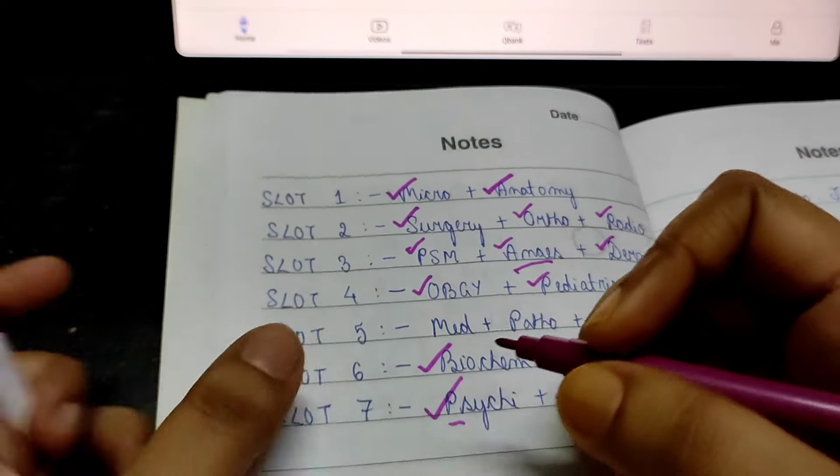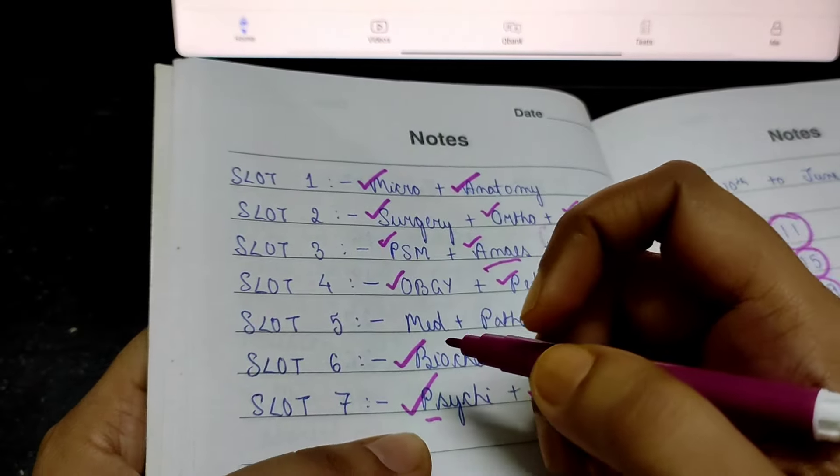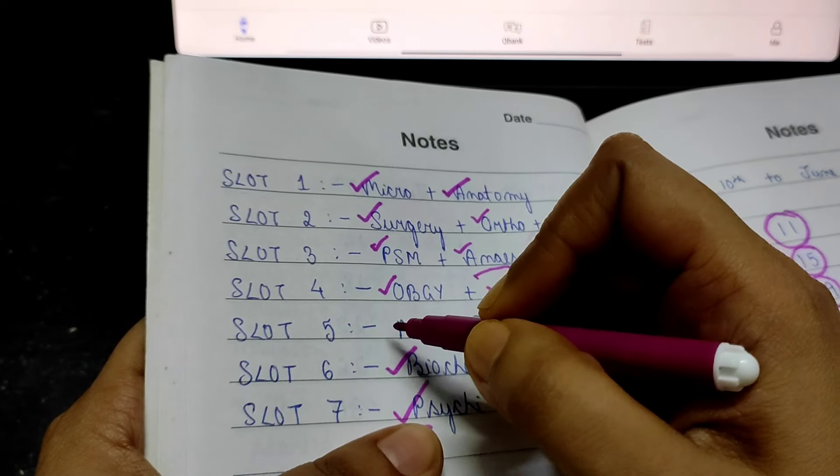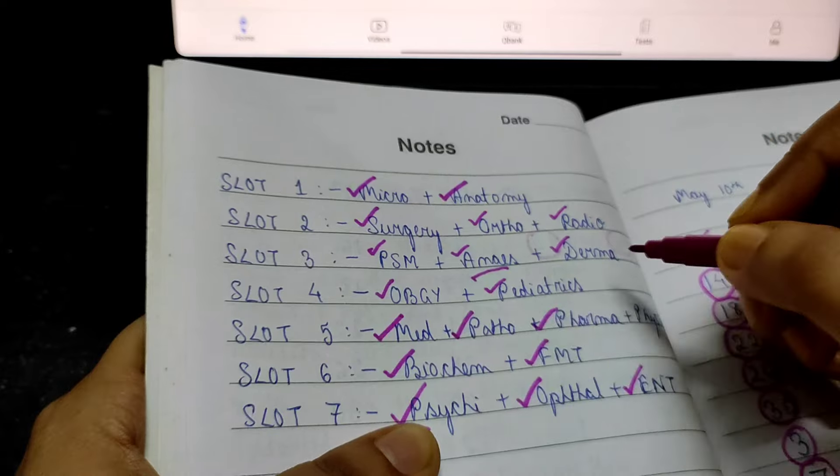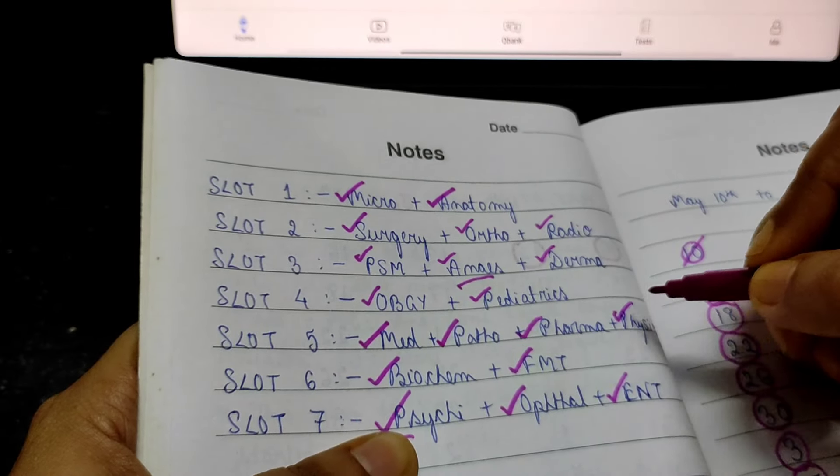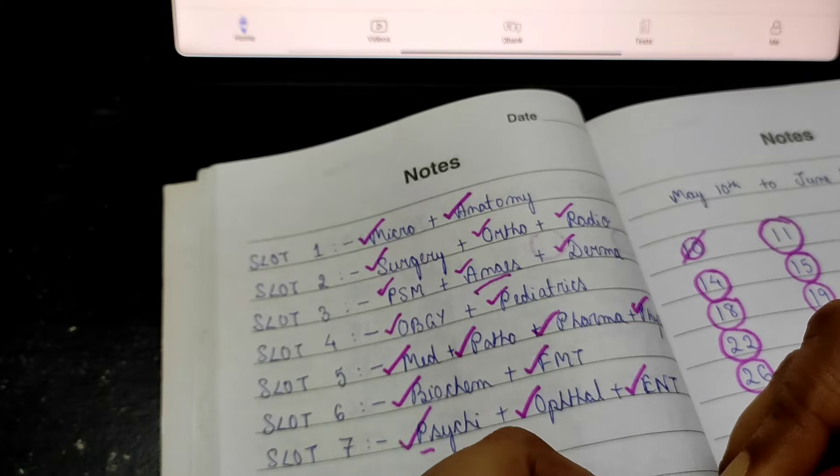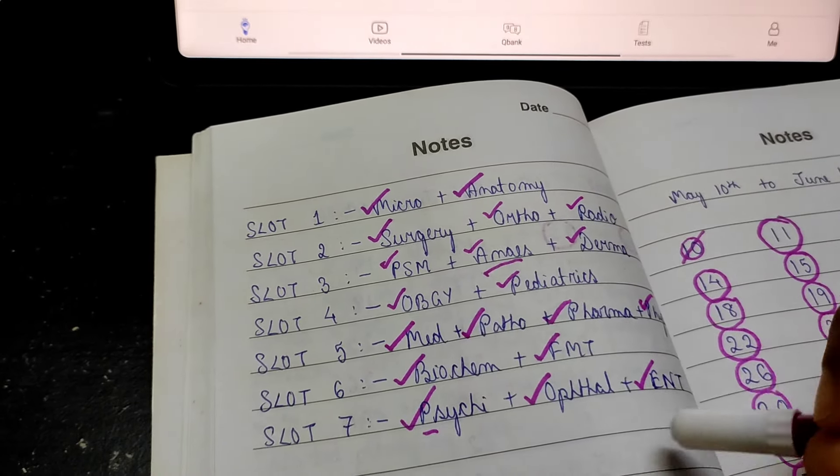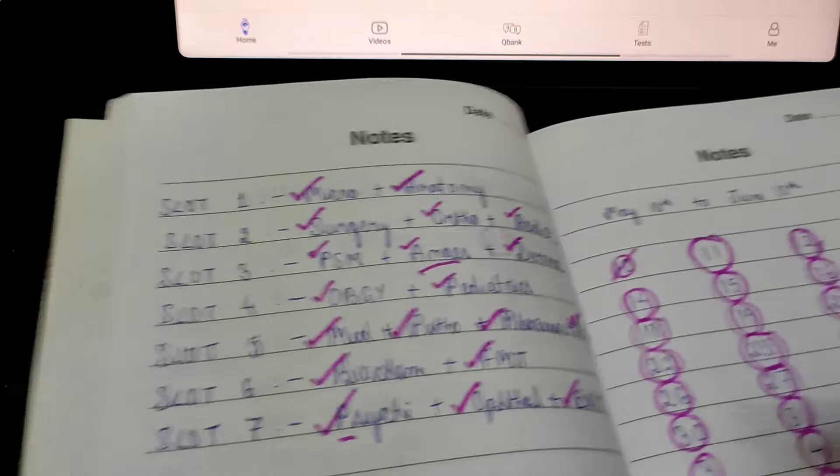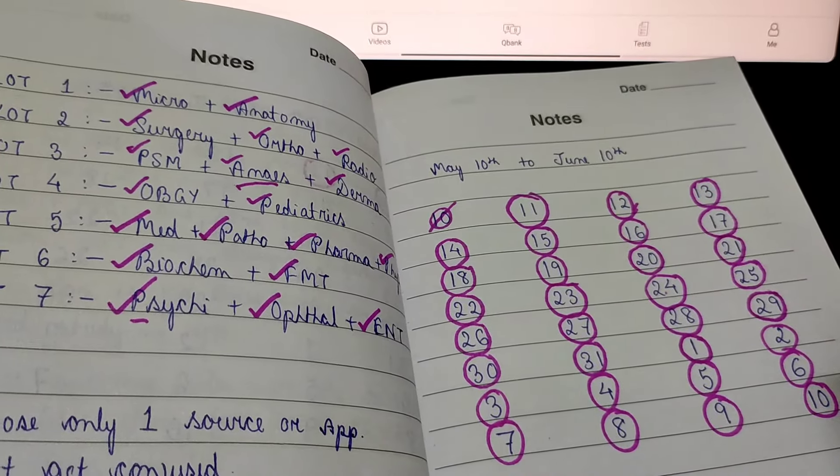So I can take medicine off, patho, pharma, and physiology also. And see, consistently we have managed to finish all the subjects till 10th of June. That's what I said, you can take the proverb slow and steady wins the race.